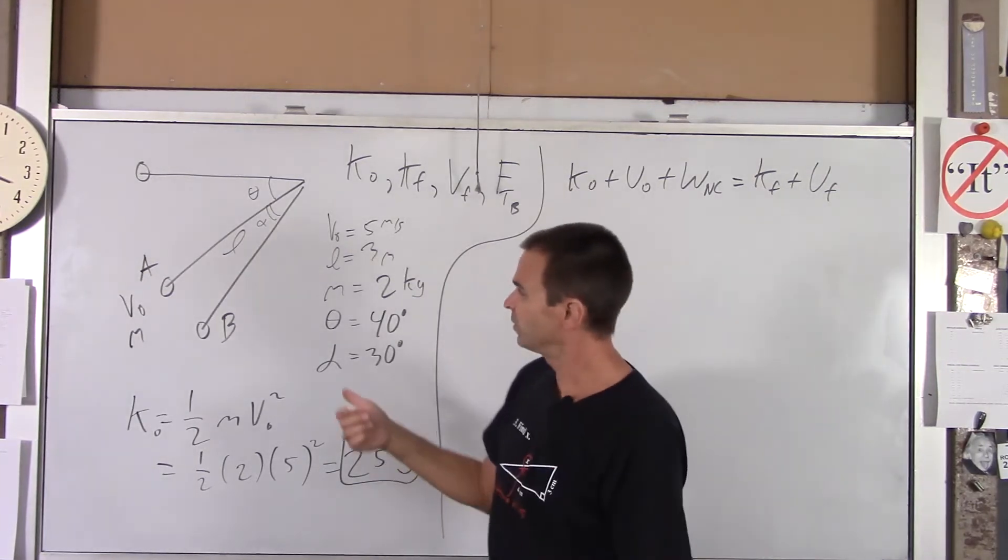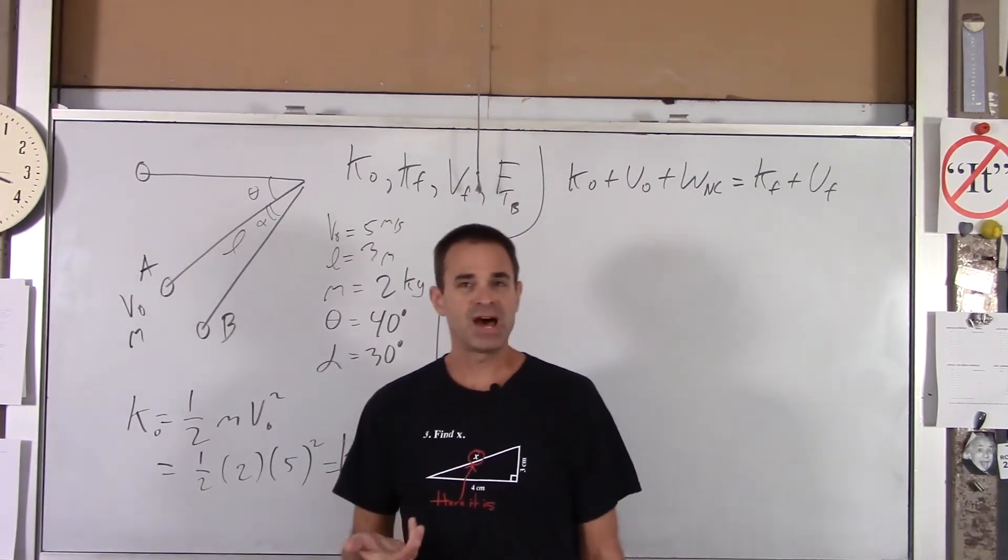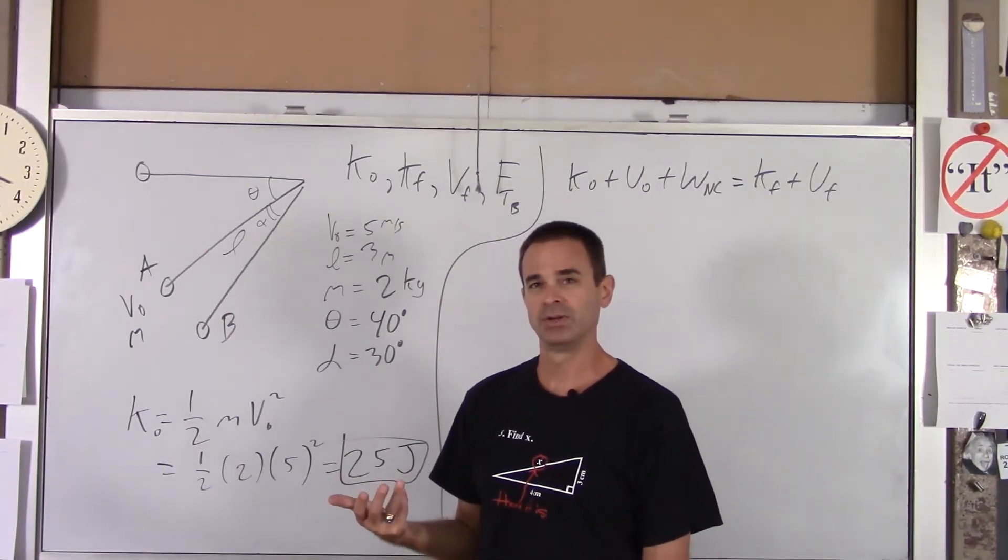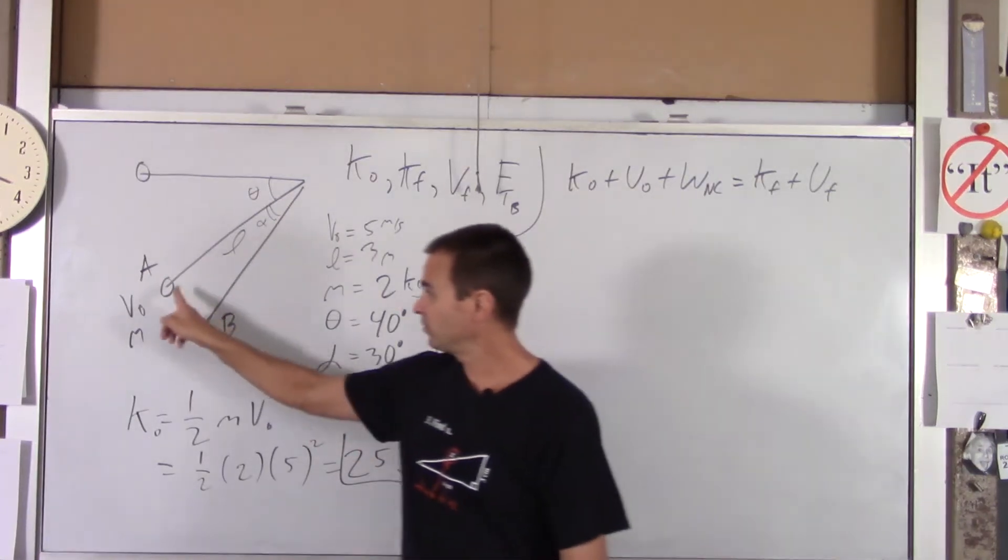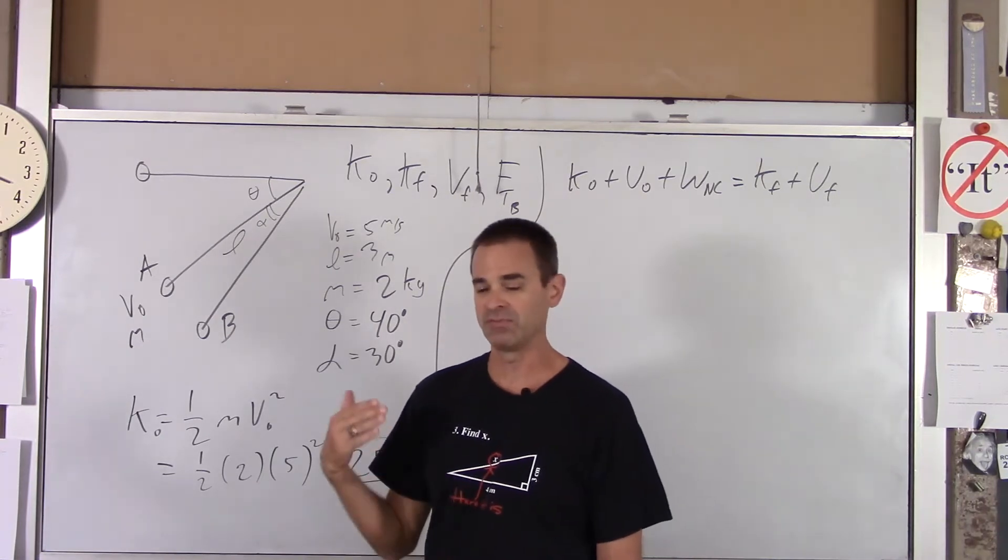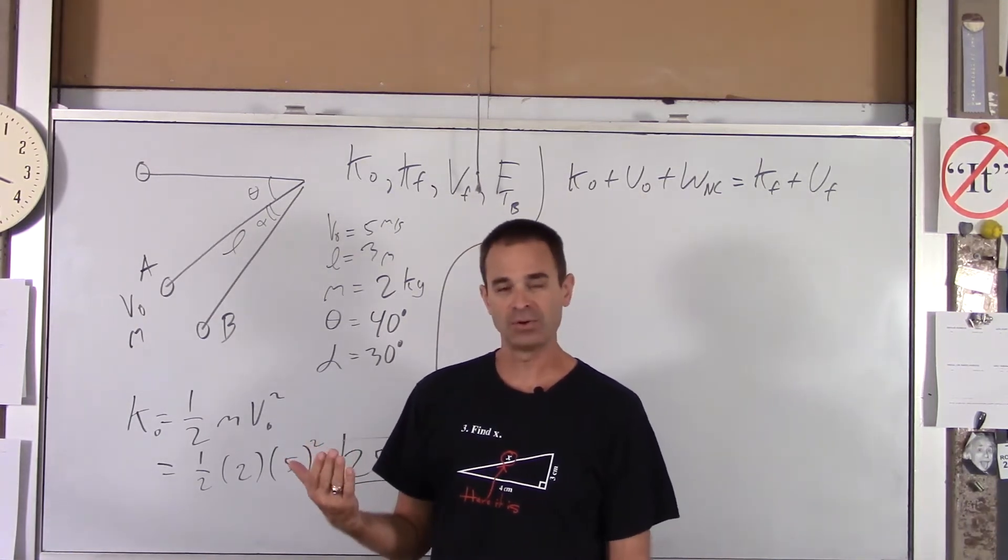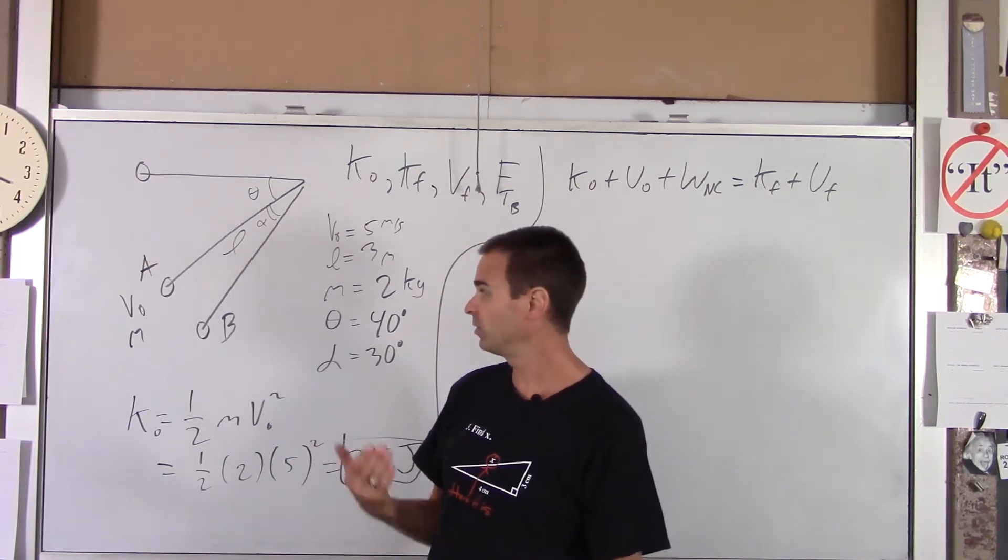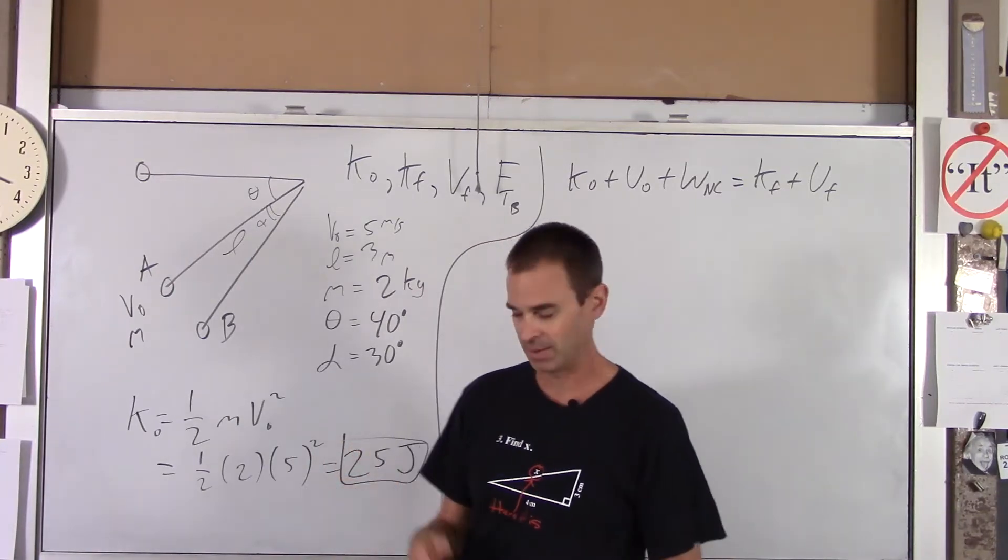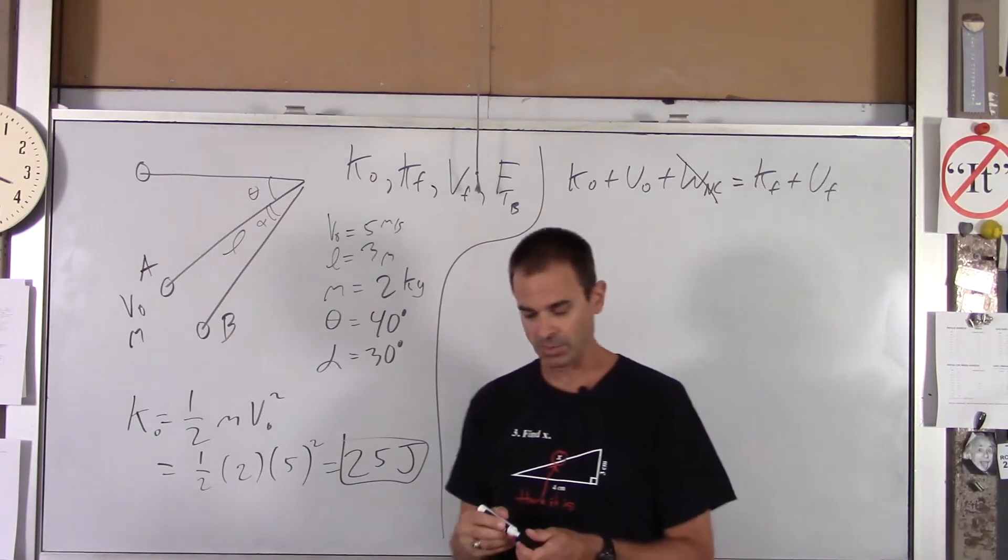You also have the tension in the string, pulling on the pendulum as it swings. That would be a non-conservative force, except it's not doing any work. Why not? Well, that tension is always perpendicular to the motion, and we know that work is the dot product of force and displacement. Since that's at a right angle, that dot product is zero. So the tension doesn't do any work. It doesn't speed up or slow down the pendulum bob. It just turns it. So this term is zero in our work.